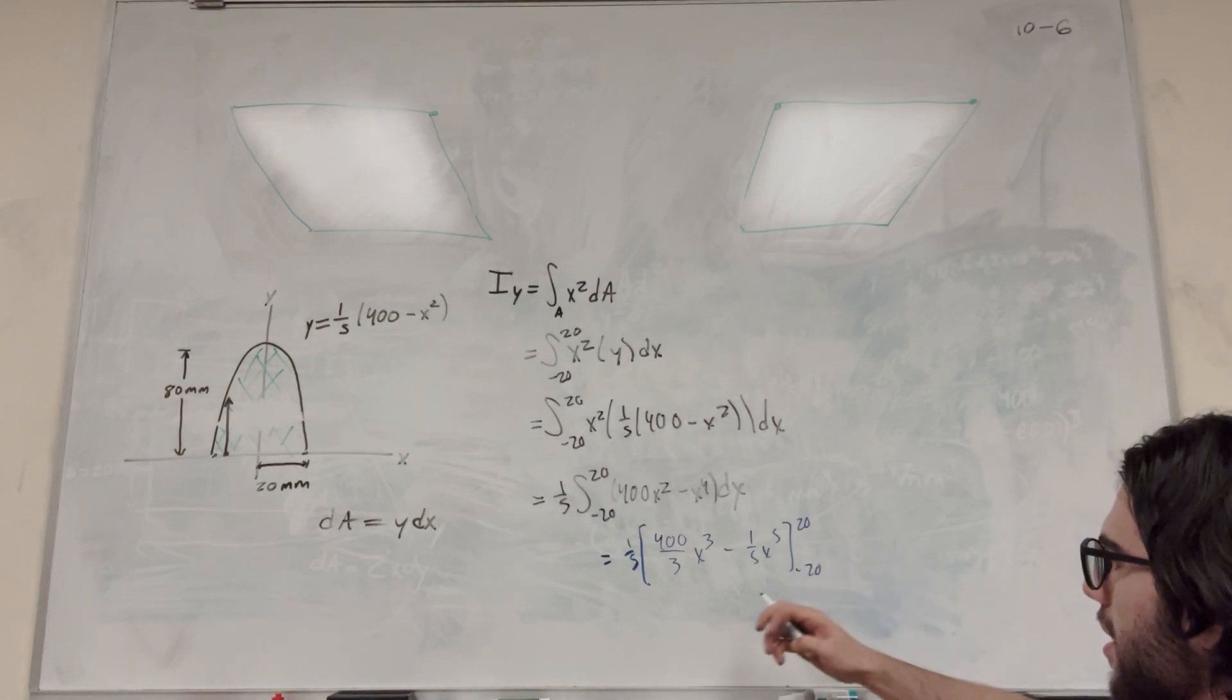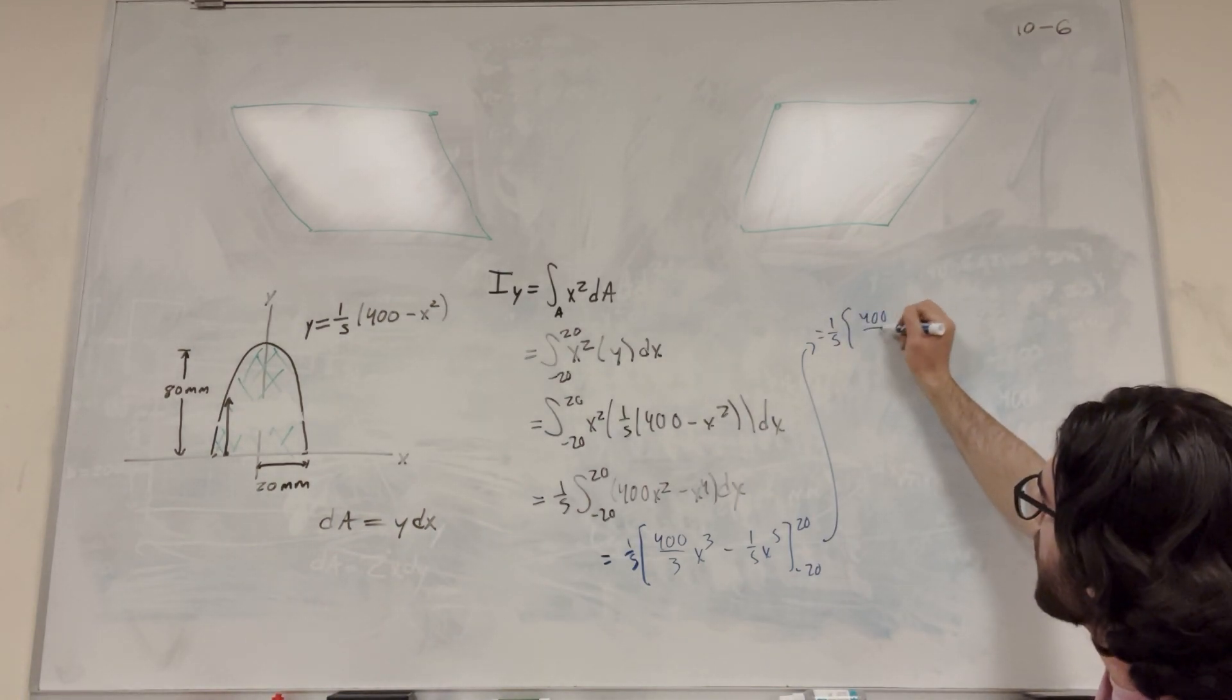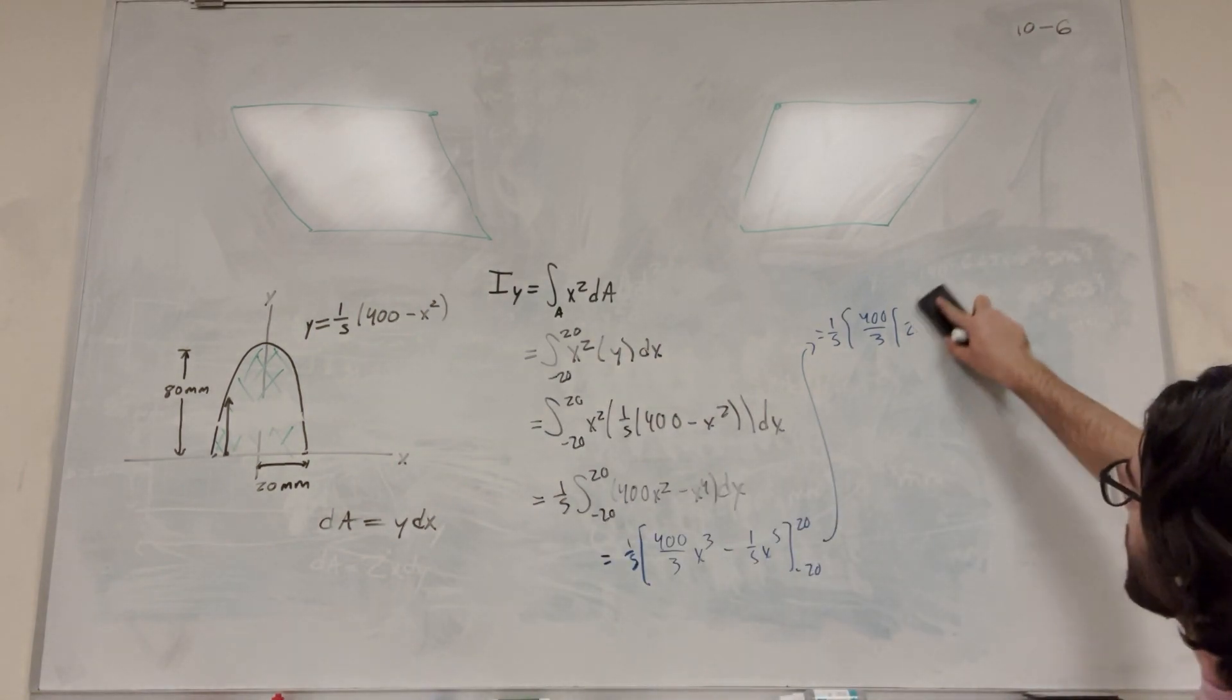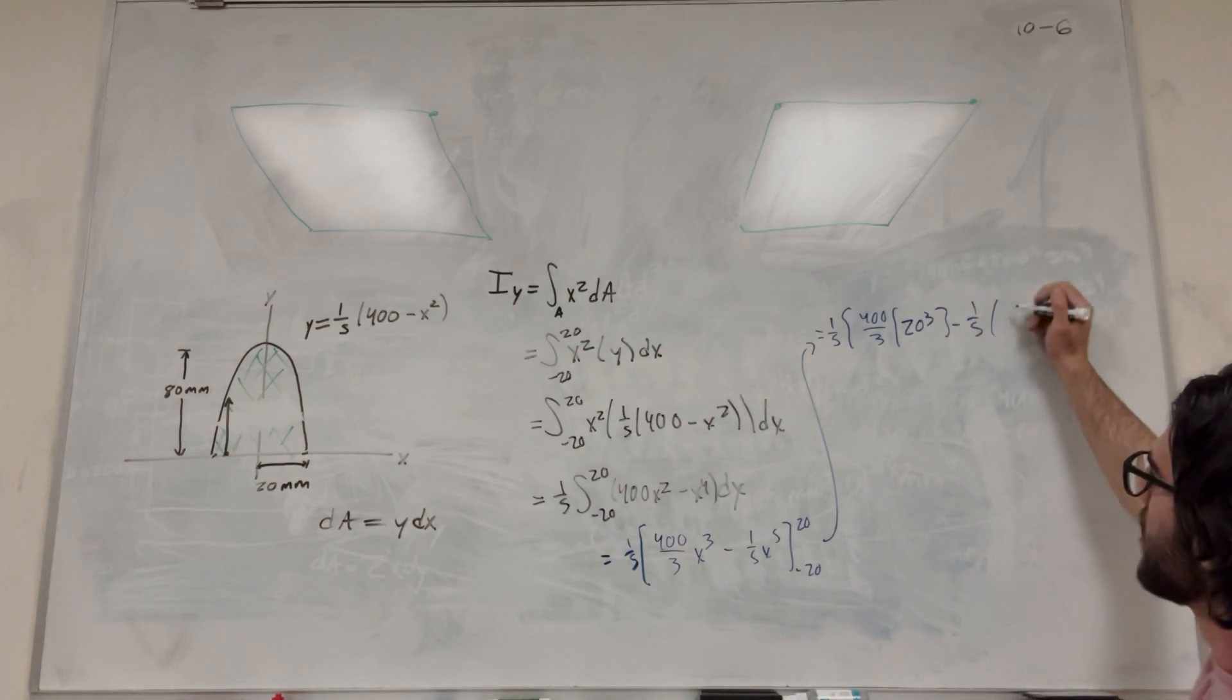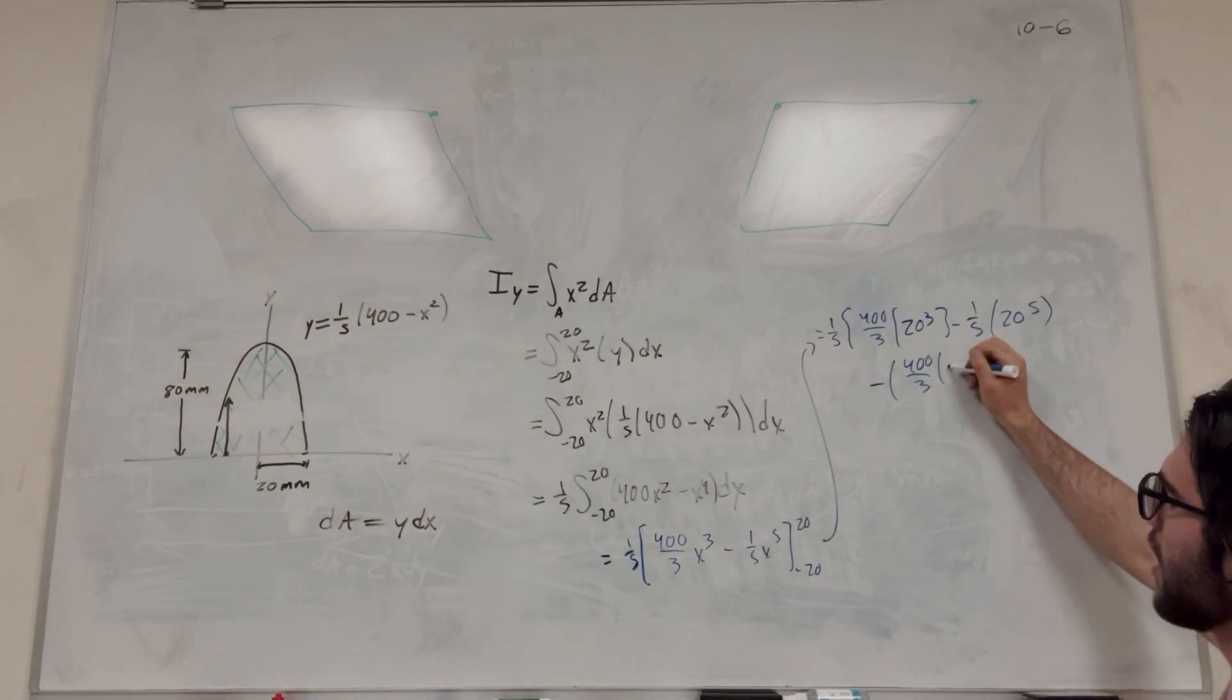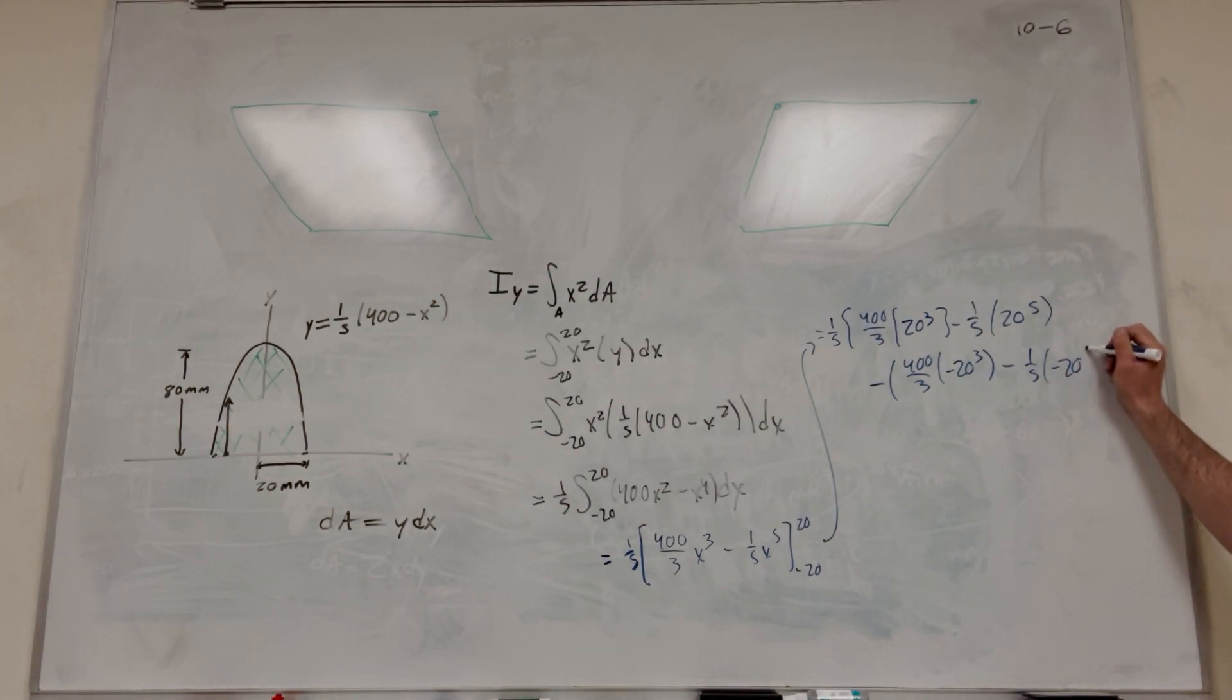So simply, all you're going to do is plug in. Hopefully we know how to do this at this point. So that's 1 over 5. So it's going to be 400 over 3 times 20 to the third, minus 1 fifth times 20 to the fifth, and then the same on the inside. It's going to be minus 400 over 3 times negative 20 to the third, minus 1 fifth times negative 20 to the fifth. Make sure you keep that, and make sure you plug this in right.